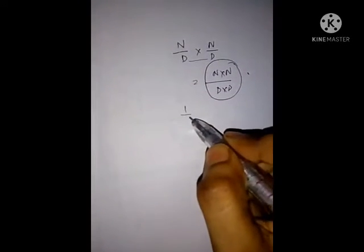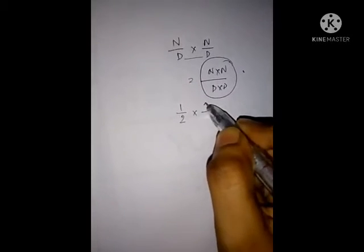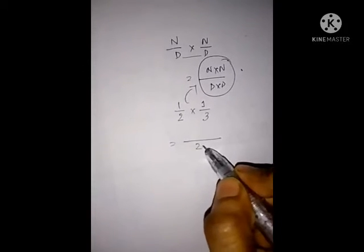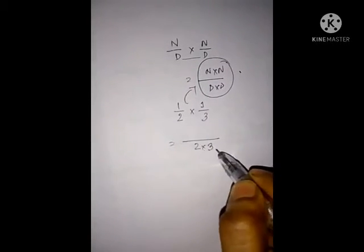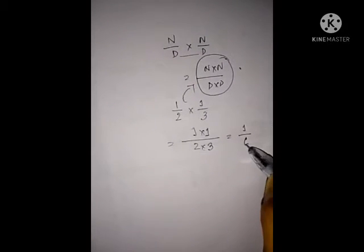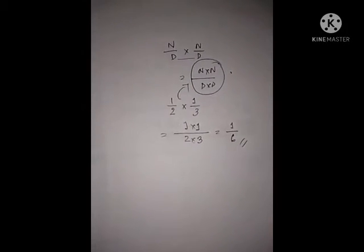Okay, see an example. 1 by 2 into 1 by 3. Just put this 2 into 3, denominator into denominator, and 1 into 1. So the answer will be 1 by 6. This is the answer. So this is very easy.